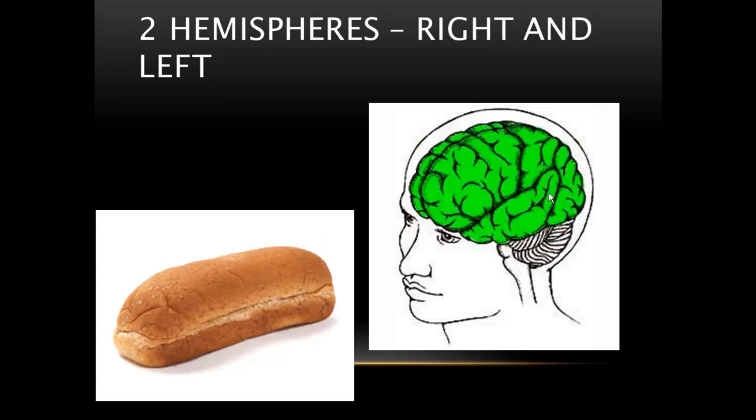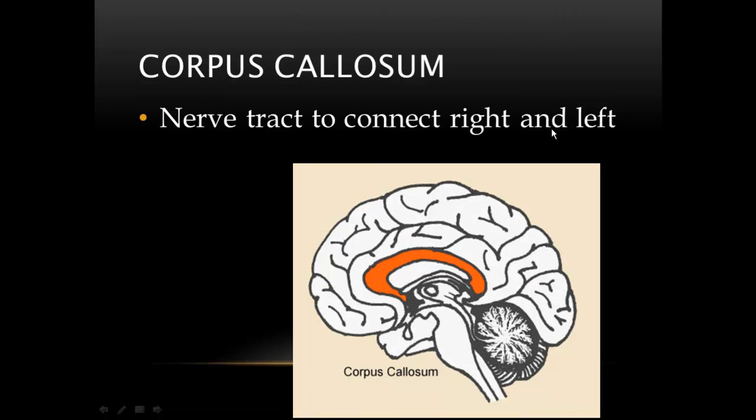Thinking of it like a hot dog bun. In the middle, the hot dog bun is connected, unless it breaks open and then it's sad because your hot dog can fall out, but this connection is what we want to think of. There is going to be a connection, and this is going to be called the corpus callosum. This is the nerve tract that connects the right to the left side of the brains.